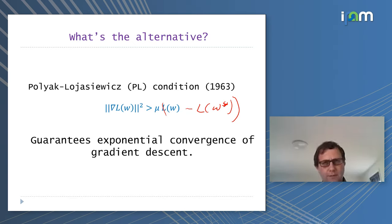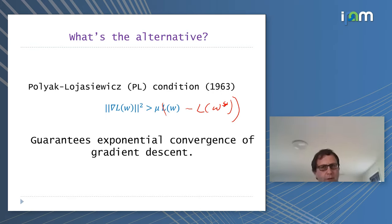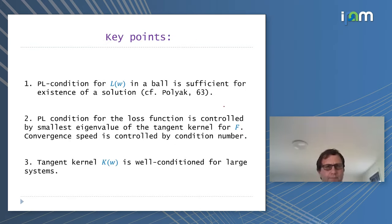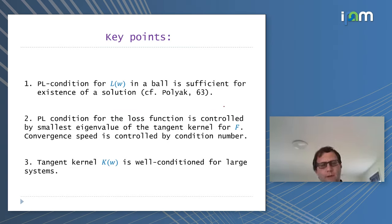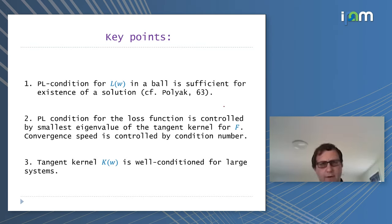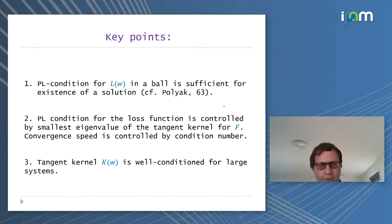This condition is well-known to guarantee exponential convergence (linear convergence if you prefer the terminology). I'd like to give a brief summary of the key points of how to use this condition to develop a general theory for large systems, and then I'll discuss it with neural networks.